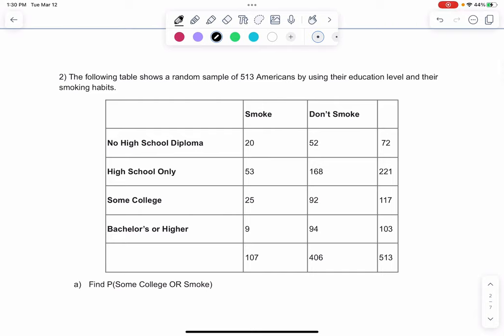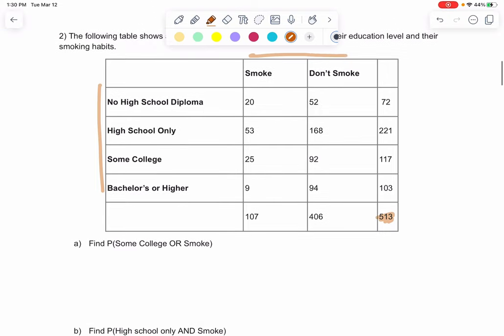All right, we have a table of 513 Americans. I noticed that matches the total in the bottom right - it's a total total. We're looking at their education level versus their smoking habits, two variables in a two-way table. So we want to find the probability that they went to some college - that would be this row right here - or they smoke. So that would be this column.